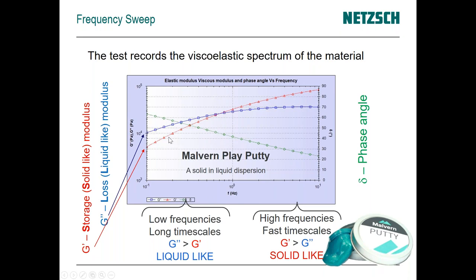As you can see from the data, at low frequencies the material is more liquid-like and at high frequencies it's more solid-like. Phase angle goes from a liquid-like phase angle of greater than 45 degrees at low frequencies to a low phase angle at high frequencies. High frequencies correspond to very short time scales; low frequencies correspond to very long time scales.